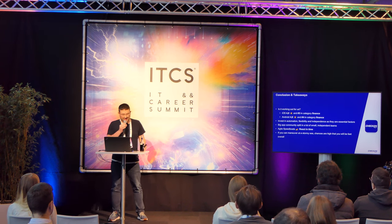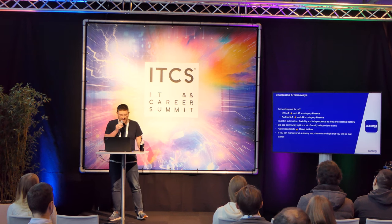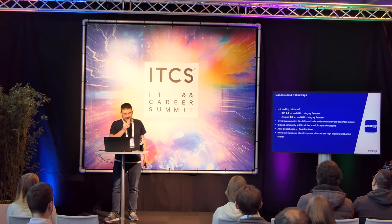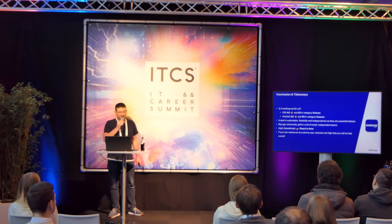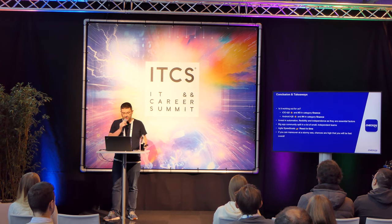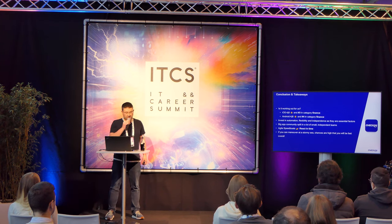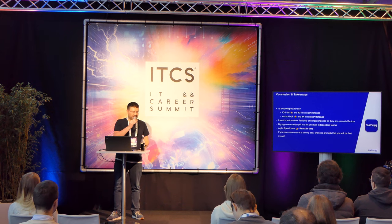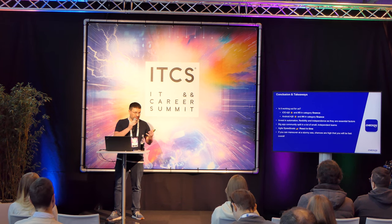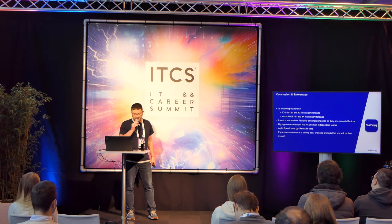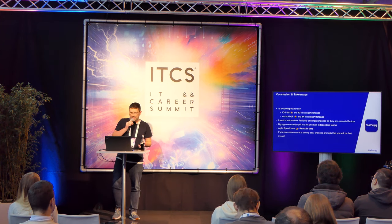Is it working out for us? We have very high ratings — at least in the German app stores, we are placed third in the Finance category on iOS and fourth in Finance on Android. How did we achieve that? We invested a lot in automation, flexibility, and independence — not only team independence but also technical independence. We have a very big app community split into many small independent teams. That brings us to those agile speedboats. If you have a big development community and are not able to release fast, you will not be able to react in time. If you can maneuver through this stormy sea of changes, the chances are very high that you will be fast and can ship as fast as you want.